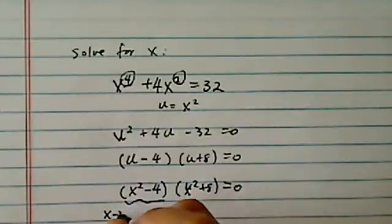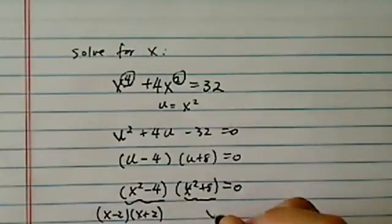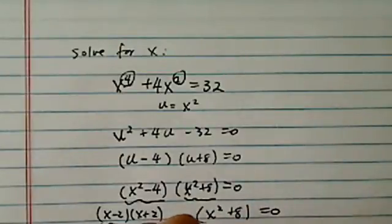This one is a difference of squares: (x - 2)(x + 2). This one is a little more complicated, x² + 8, let's leave this one. So each one of them is going to be set equal to 0.